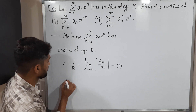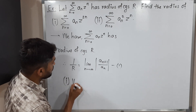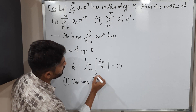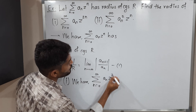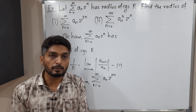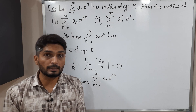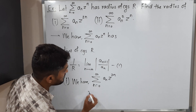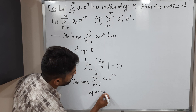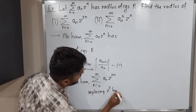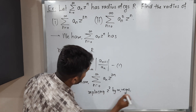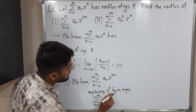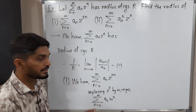Let us start with the first sub-question. We have the power series summation n from 0 to infinity, a_n z^{2n}. Since z^{2n} looks a little different, I'm going to replace z² by w to bring it into standard form. So replacing z² by w, we get summation n from 0 to infinity, a_n w^n, which is now in standard form.